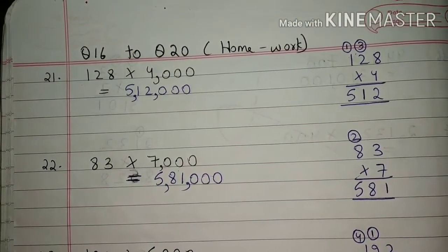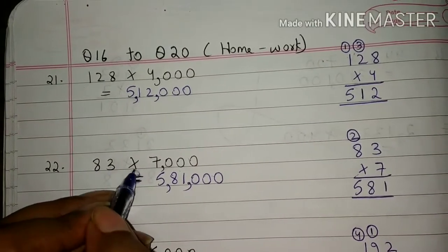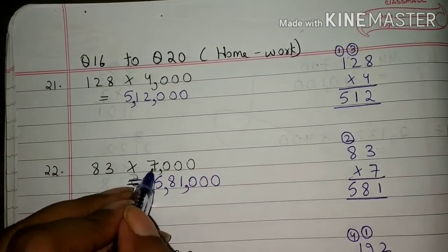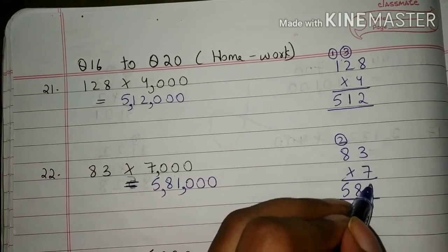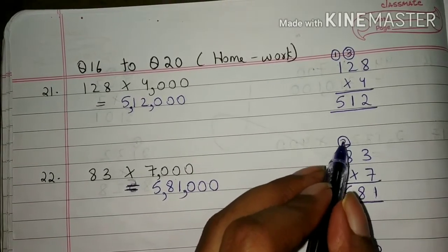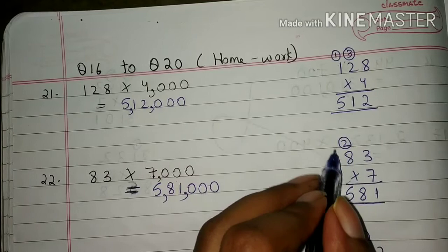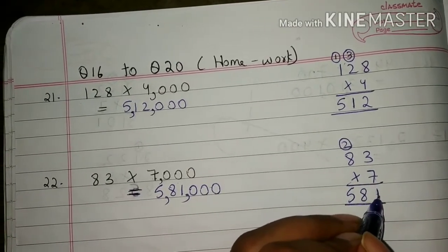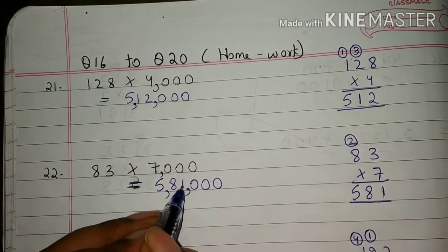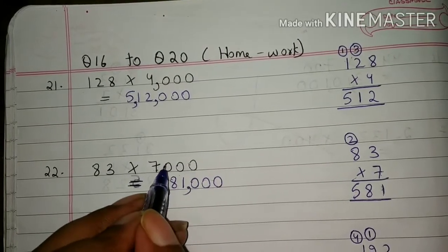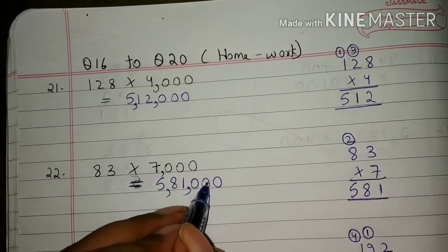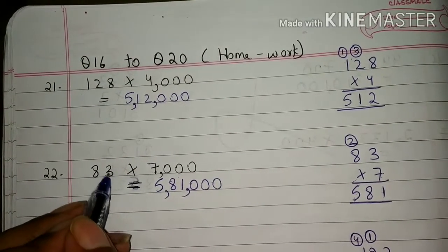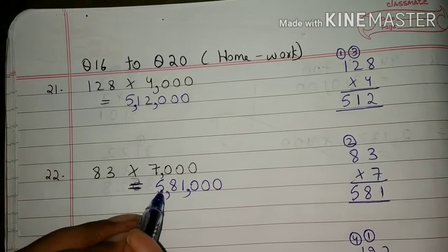22nd question: 83 into 7000. Students, first we will multiply 83 by 7. So 7 into 3 is 21. 1 we have written here and 2 will be carried. 7 into 8 is 56 plus 2 is 58. Students, 83 multiplied by 7 will give 581. So students, we will write 581 here, and here 0 is written 3 times, that is 0 0 0. So we will write 0 three times here also. Now students, 83 multiplied by 7000 will give 581,000.